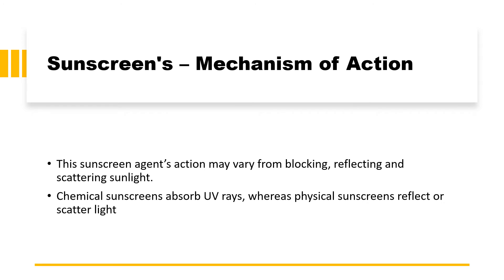How does sunscreen actually work? The sunscreen's action may vary — it may either block the radiations, reflect the radiations, or ultimately scatter the sunlight. Chemical sunscreens actually absorb the UV rays, whereas physical sunscreens reflect or scatter the light. So you can say there are three ways sunscreen works: blocking and reflecting and scattering by physical sunscreens, whereas chemical sunscreens absorb the UV radiations.